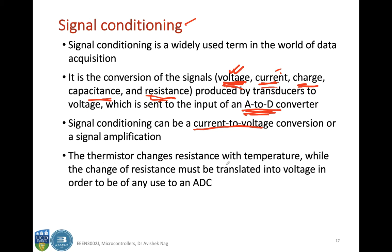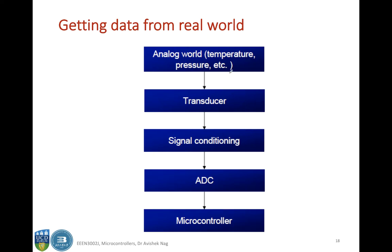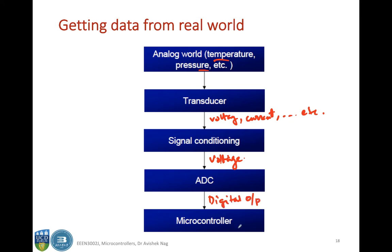Going back to the thermistor — the thermistor changes resistance with temperature, so this resistance change has to be calibrated to a voltage by the method of signal conditioning, because this change of resistance must be translated into voltage to be of any use to an A to D converter. Getting data from the real world, you get analog data like temperature and pressure. Then a transducer converts that into an electrical signal — voltage or current. You do signal conditioning to get a voltage, which goes to the ADC, and the digital output of the ADC goes to your microcontroller.